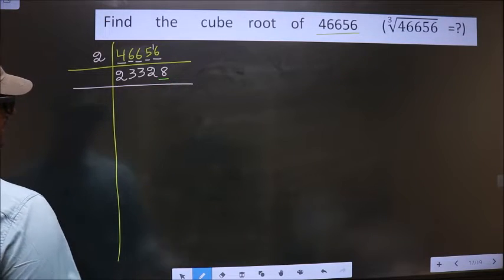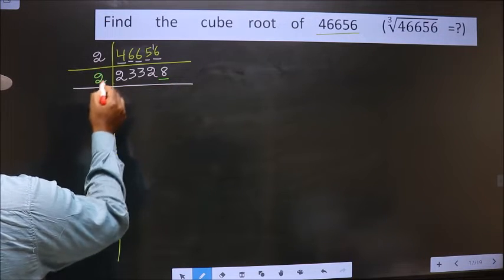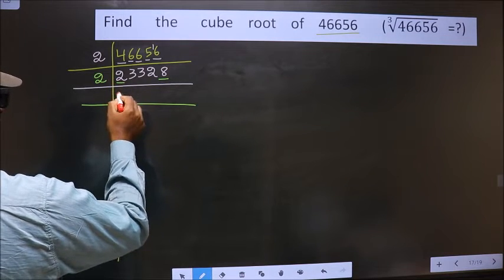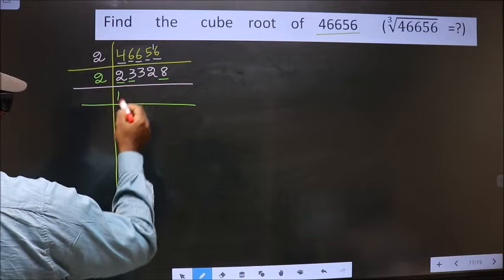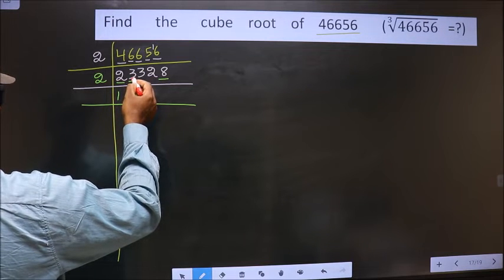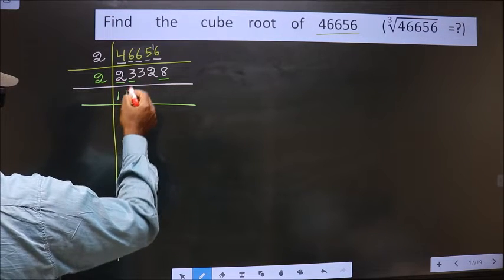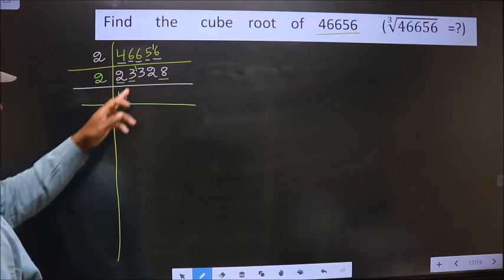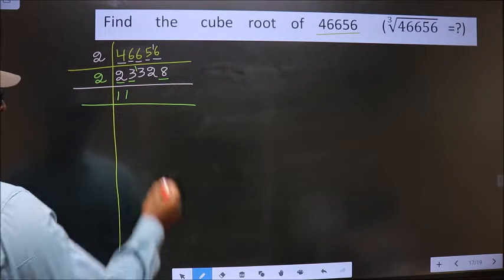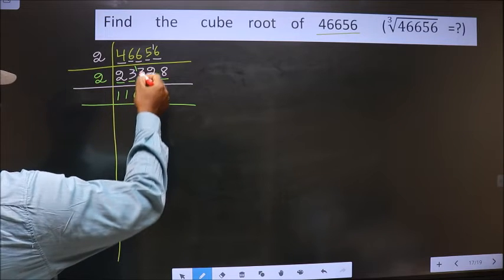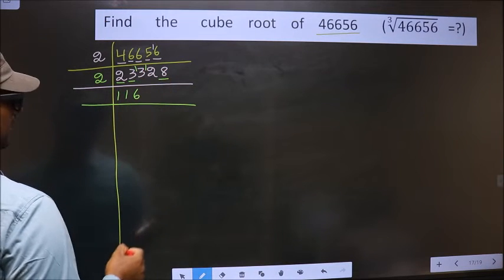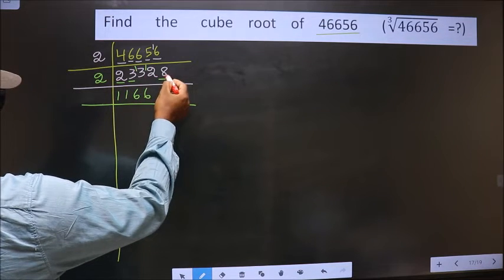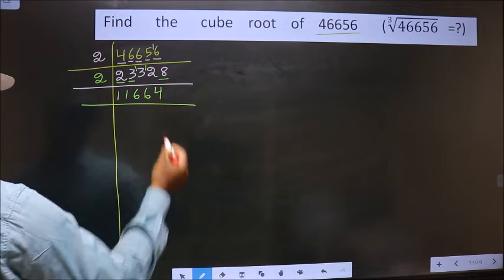For the next number, last digit is 8, which is even, so we take 2. First digit is 2 — 2×1 is 2. Next digit is 3: closest in the 2 table is 2×1=2; 3 minus 2 is 1, carried forward making it 13. Closest to 13 is 2×6=12; 13 minus 12 is 1, carried forward making it 12. 2×6 is 12. Next digit is 8 — 2×4 is 8.